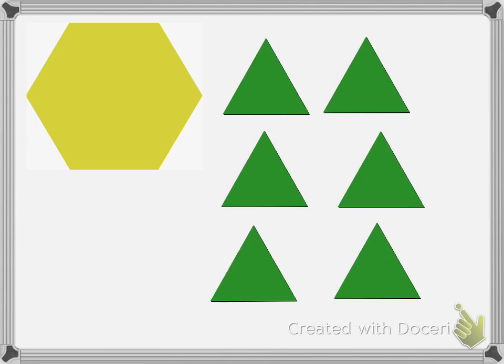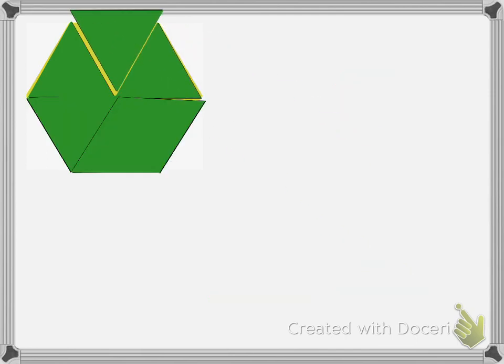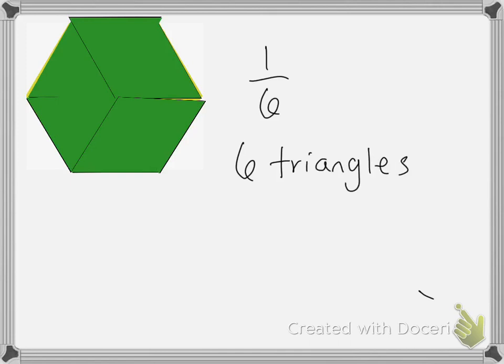Now with my green triangles, it will take six pieces to fill in the whole hexagon. So a green pattern block will be 1/6 of the whole shape, because it takes six triangles to fill the whole shape.